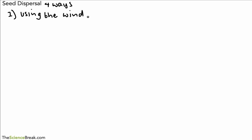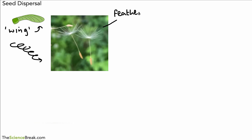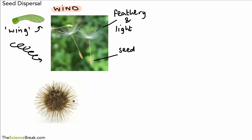So the first method is wind dispersal. We have the dandelion seeds, but we also have a seed attached to a wing — I'm sure you've seen these before. When the wind blows, they spin and are carried away from the parent plant. The dandelion seed has a feathery and light part at the top so it can be carried easily, with a small seed at the bottom. Both are easily carried by the wind.